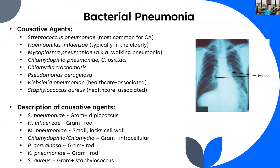In terms of the causative agents: Strep pneumo is a gram-positive diplococcus; Haemophilus influenzae is a gram-negative rod; Mycoplasma is a small, cell wall-less bacterium; Chlamydophila and Chlamydia species are gram-negative intracellular bacteria; Pseudomonas aeruginosa and Klebsiella pneumoniae are gram-negative rods; and Staphylococcus aureus is a gram-positive staphylococcus.